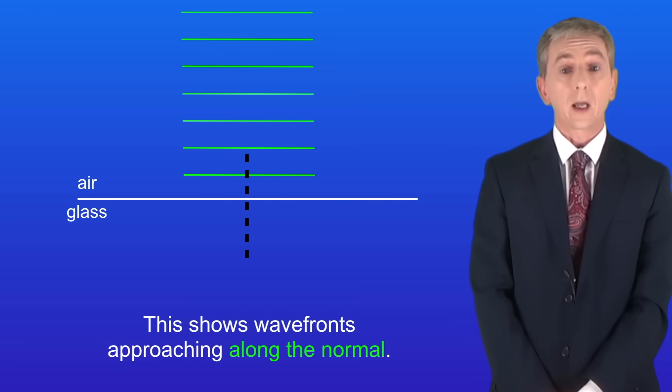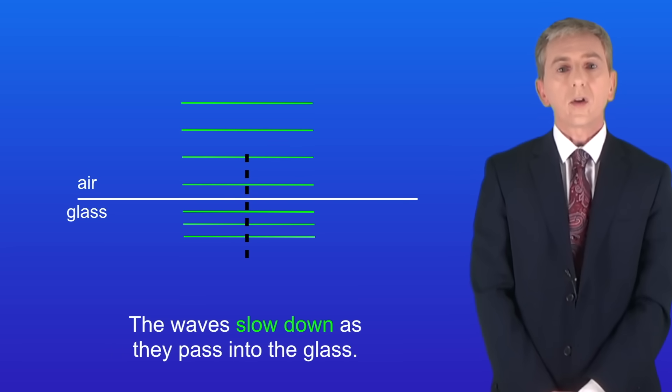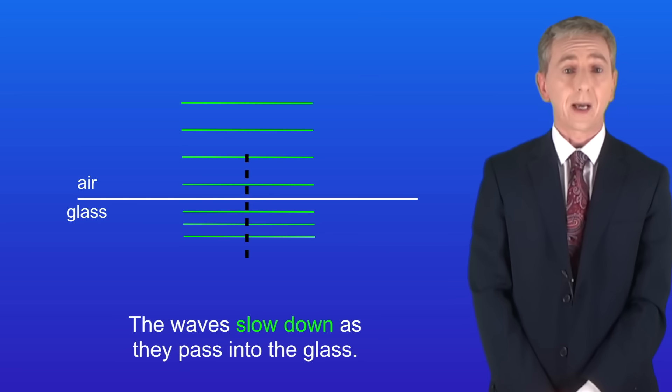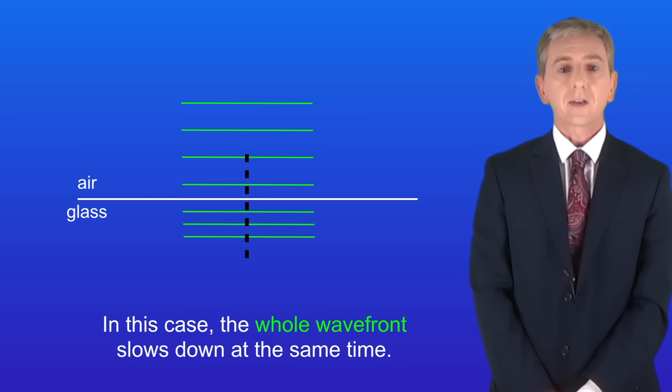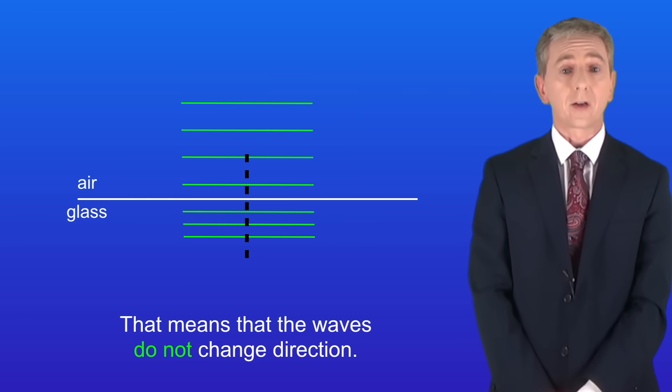This shows wavefronts approaching along the normal. Once again the waves slow down as they pass into the glass. However in this case the whole wavefront slows down at the same time. And that means that the waves do not change direction.